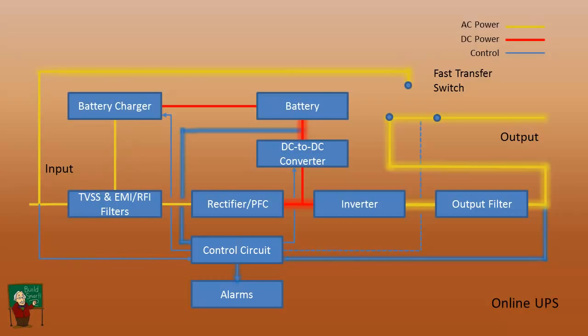If we lose power, you see that there's not a whole lot of change. Nothing really transfers. We have an alarm for the loss of power. Basically, the battery is providing the DC that goes to the inverter instead of the rectifier. So no transfer. There's no break whatsoever in the output voltage.